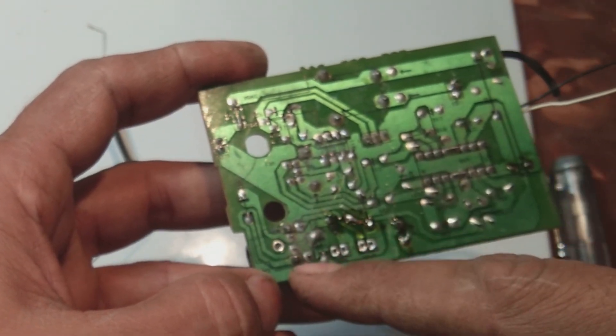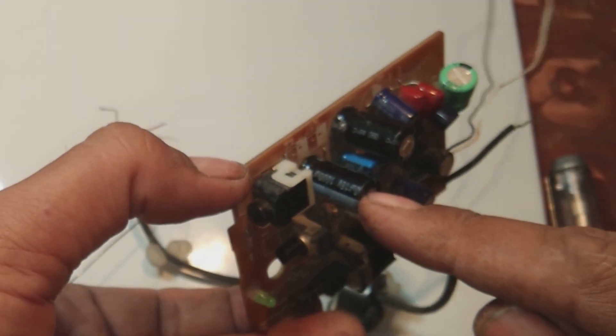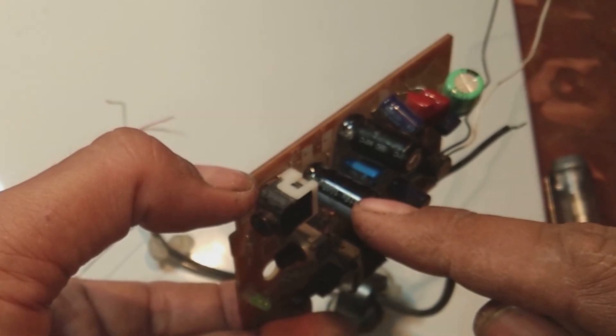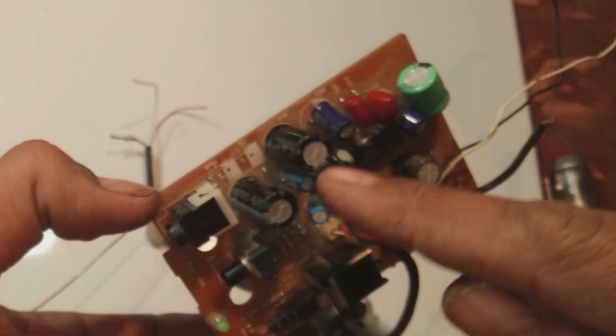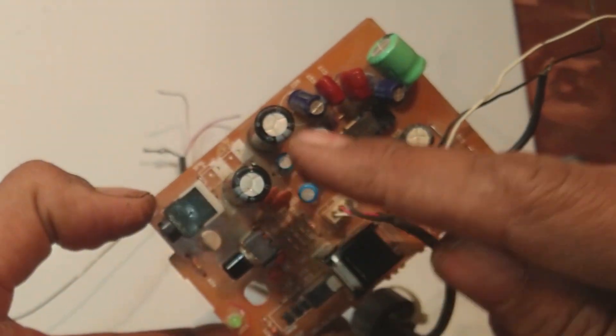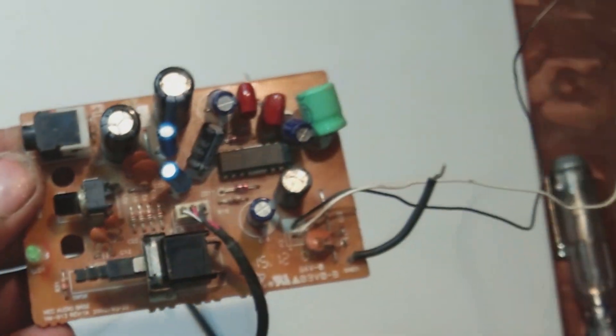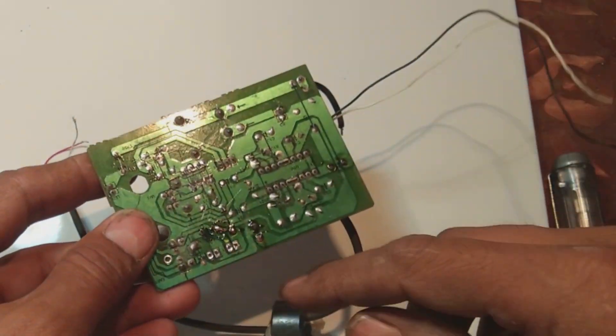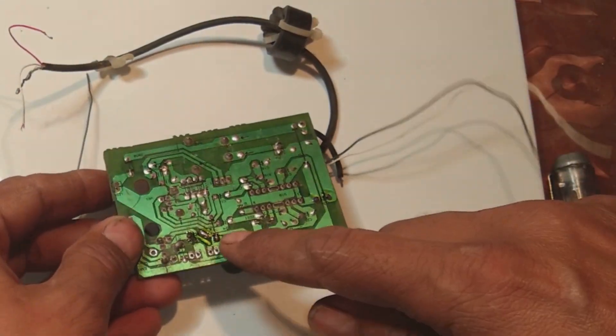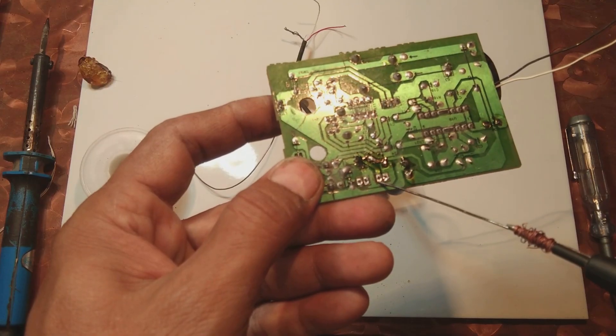Now what we will do is power this circuit up. But before powering up, we will check these output capacitors. These 1000 microfarad, 16 volt capacitors - two capacitors are there. These are output coupling capacitors. They are very important in the circuit. If you don't know about these output capacitors, you can check on the datasheet of the IC. It will show you that the output capacitors are there.